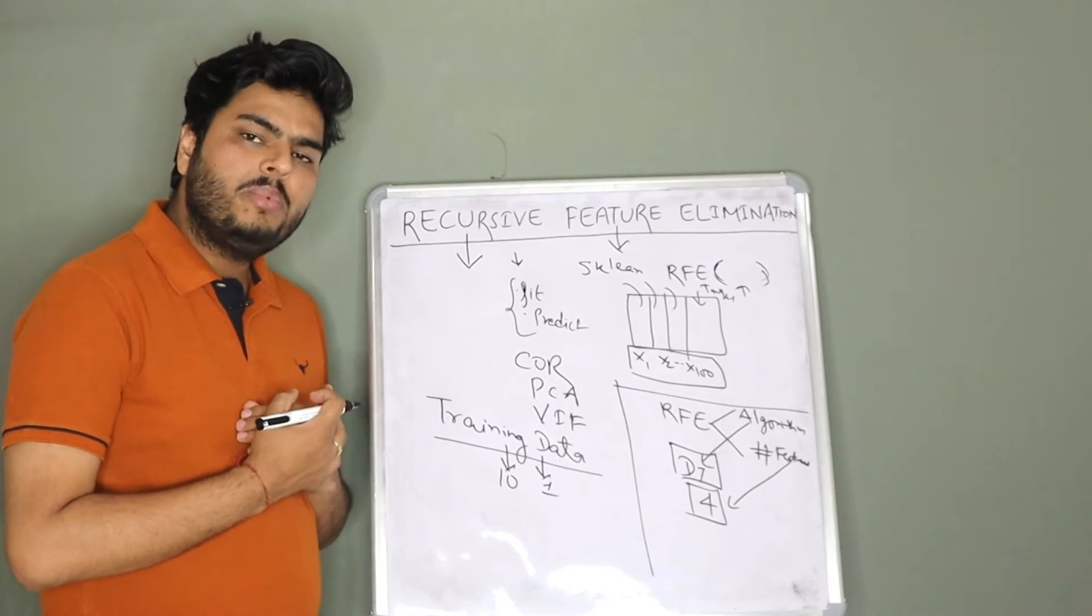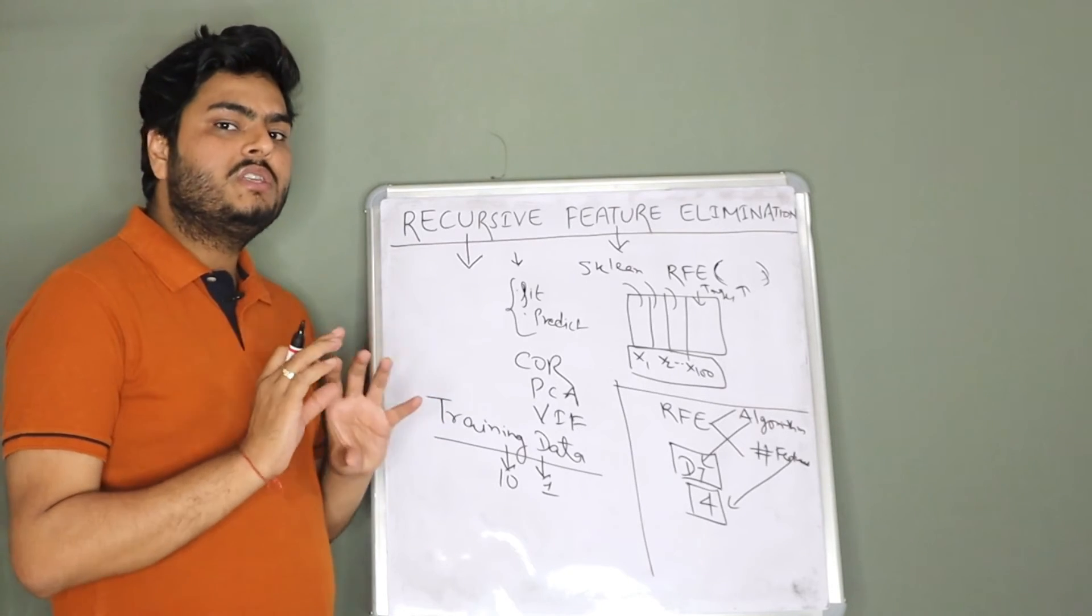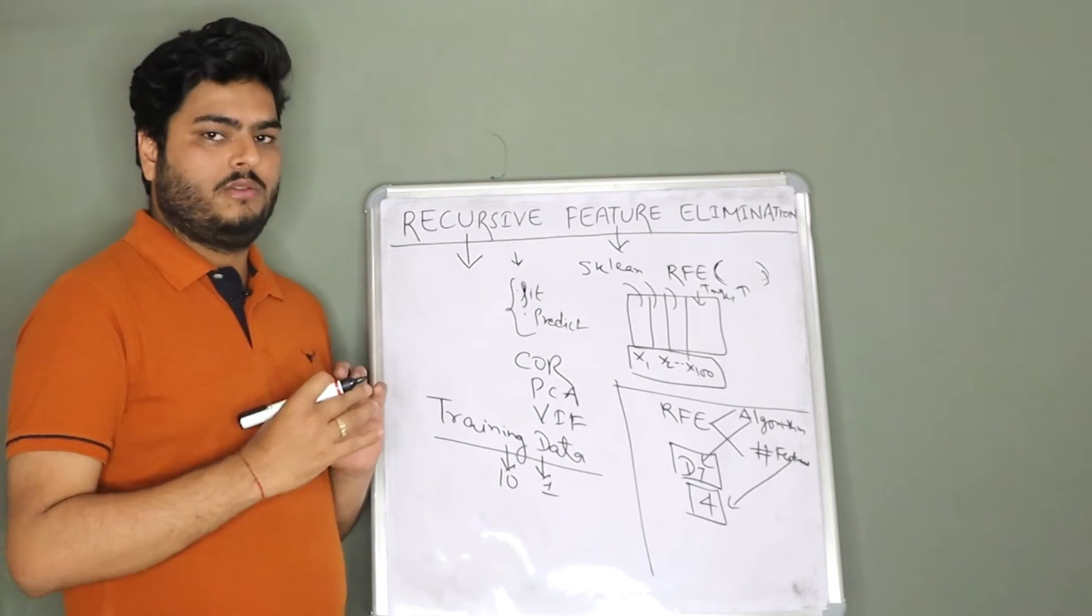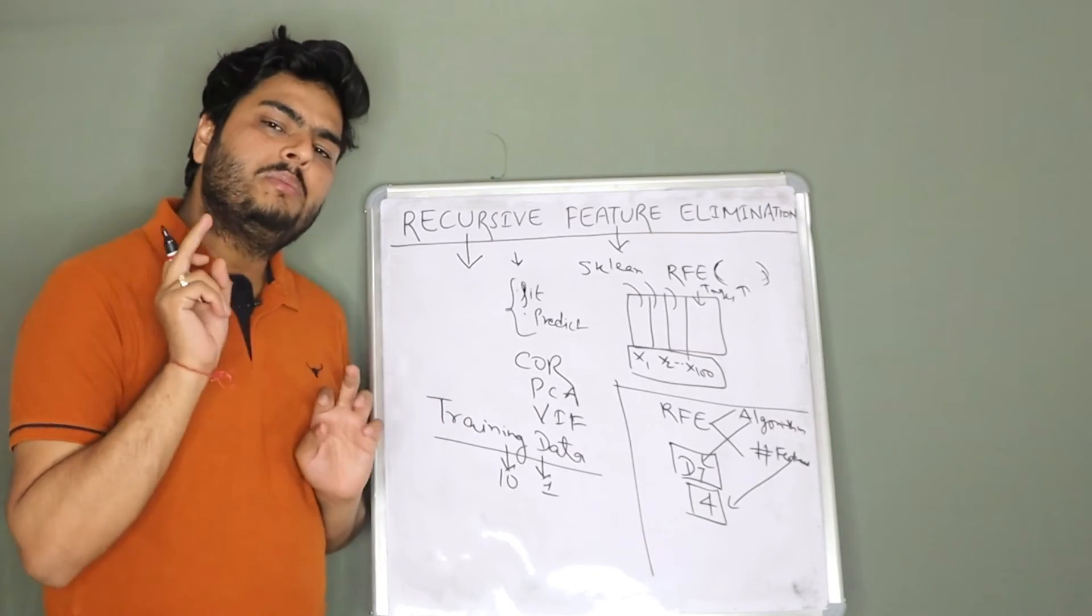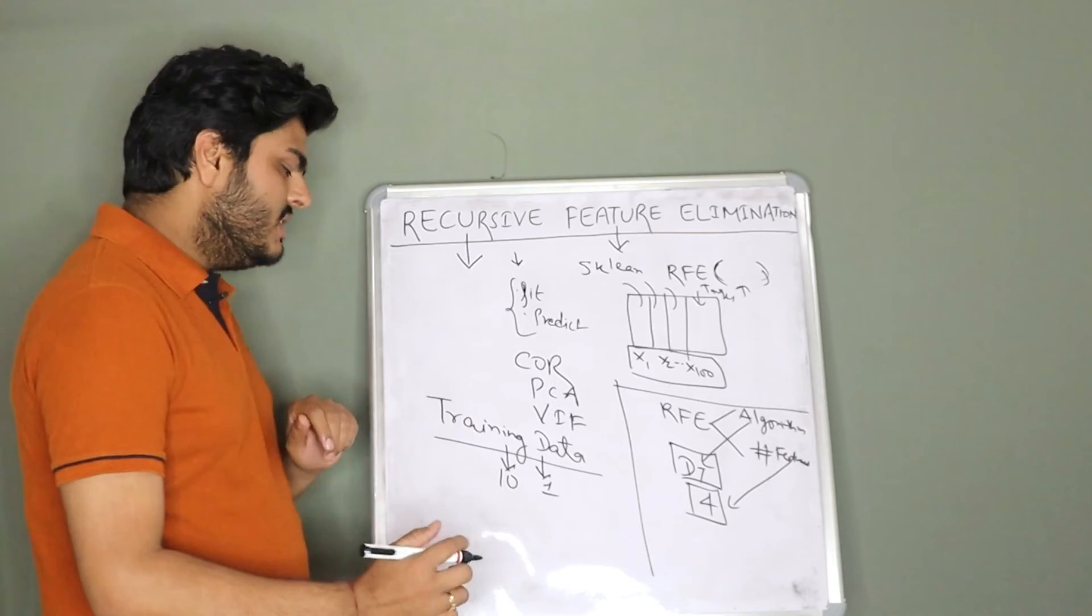Next iteration, what will happen is, it will see the importance of all those 10 features and remove one least important feature. Now, here also there is one parameter that you can set. We started with 10 features. In the next iteration, the model will again run on 9 left over features.